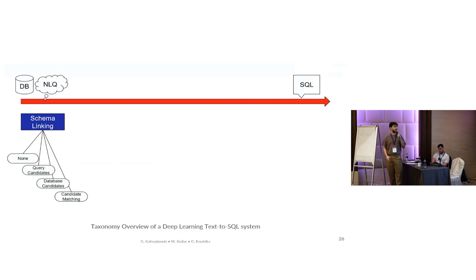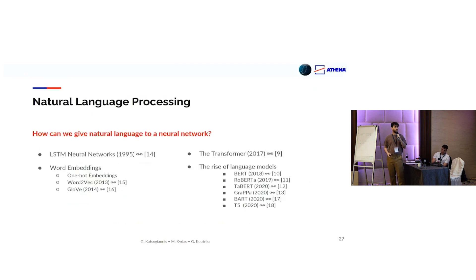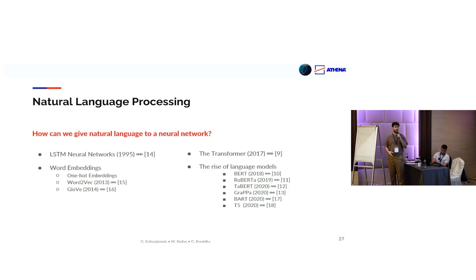Now that we have our inputs and additional information from schema linking, we must find a way to create a representation for the natural language that can be accepted by the neural network. The go-to technique for a long time was using trained word embeddings and recurrent neural networks — for example, GloVe embeddings and LSTM networks. However, since the introduction of the transformer architecture and pre-trained language models, this is the best way to do it, and the best performance is usually achieved using pre-trained language models such as BERT. We make an additional distinction between models that are encoder-only or encoder-decoder.